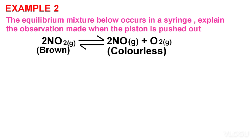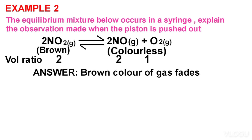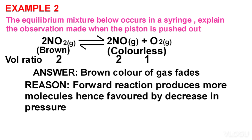Note 2: in this reaction, the forward reaction produces 3 molecules (more molecules) — obtained from 2 molecules of NO₂ gas plus 1 molecule of O₂, giving 3. The backward reaction produces 2 molecules (fewer molecules). When the piston is pushed out, there is a decrease in pressure because volume increases. Therefore, the answer is: the brown colour of gas fades. Reason: the forward reaction produces more molecules, hence favoured by decreasing pressure. Equilibrium shifts from left to right because decreasing pressure favours the direction that produces more molecules.